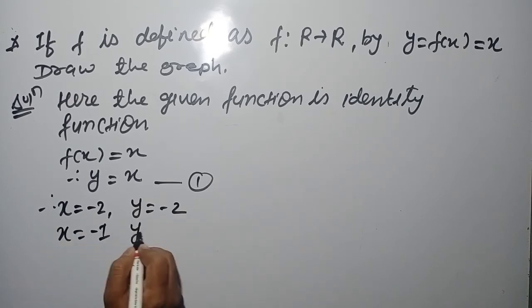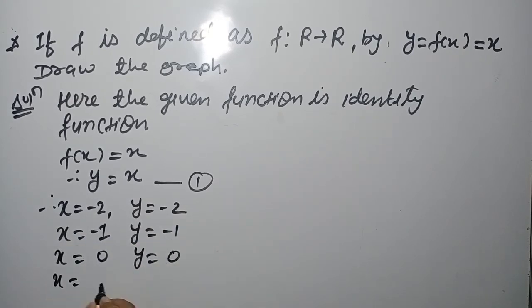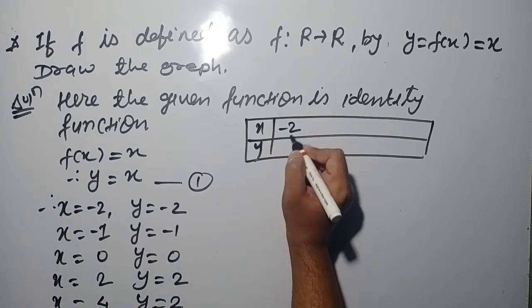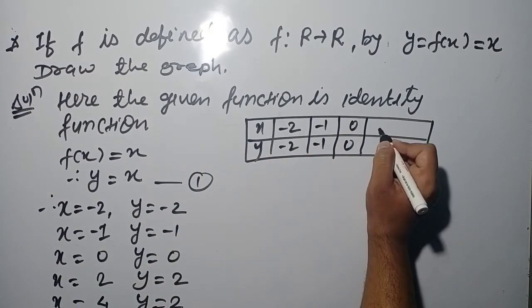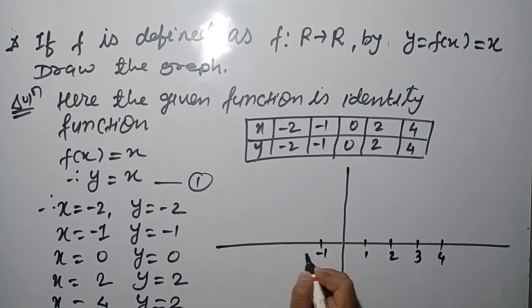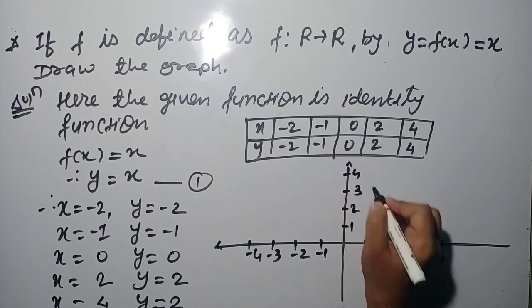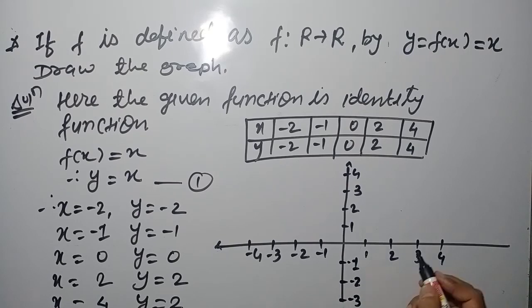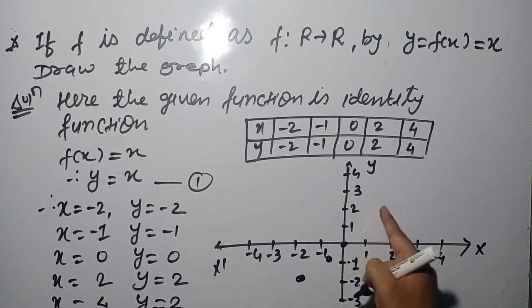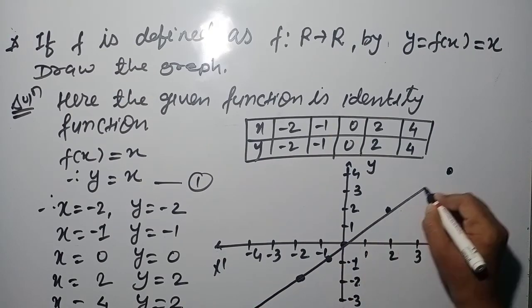Identity function is defined as the real-valued function f: R → R, y = f(x) = x. For example, f defined on R to R with f(x) = x. Substituting: x = -2 gives y = -2, x = -1 gives y = -1, x = 0 gives y = 0, x = 2 gives y = 2. Let us tabulate all these input and output values, then plot on the graph. The first point x = -2, y = -2, then x = -1, y = -1, and so on. The graph gives the line y = x.